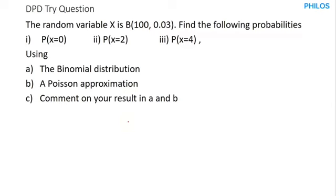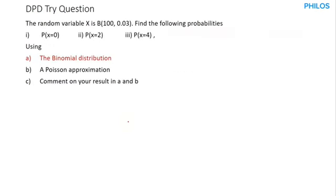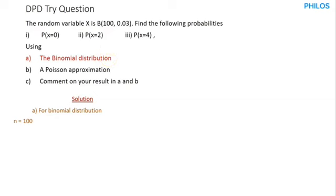So let's solve this together, starting with part A, the binomial distribution. For binomial distribution, the first argument in the bracket is the number of trials, which is n, so n is equal to 100. The second argument is the probability of success, which is 0.03, so p equals 0.03.